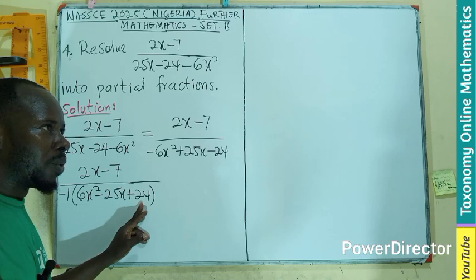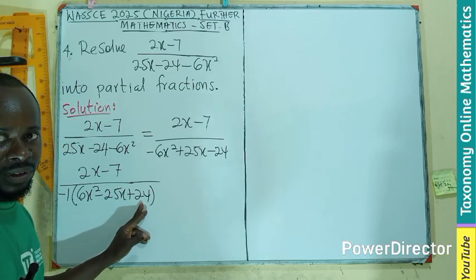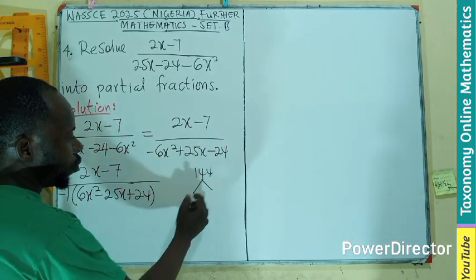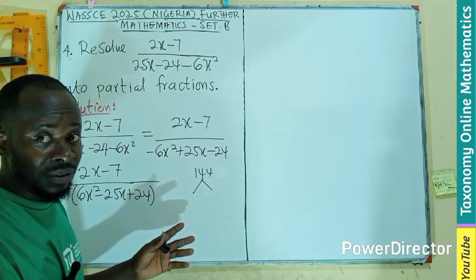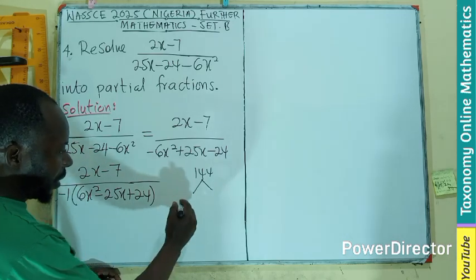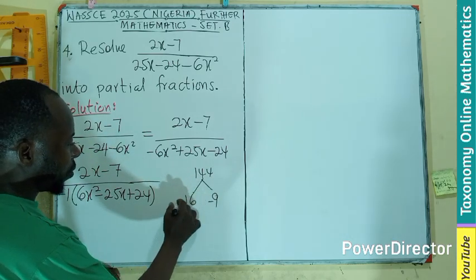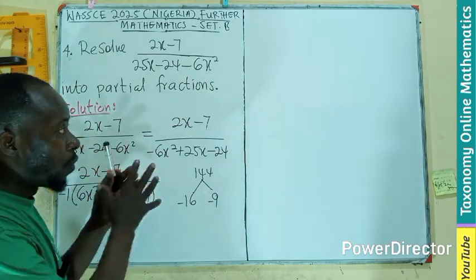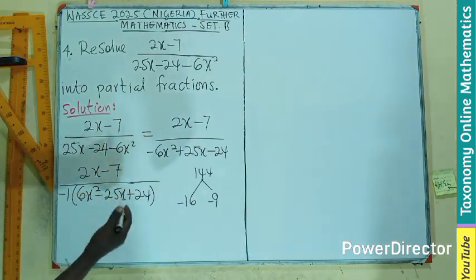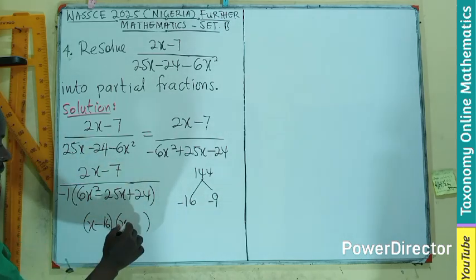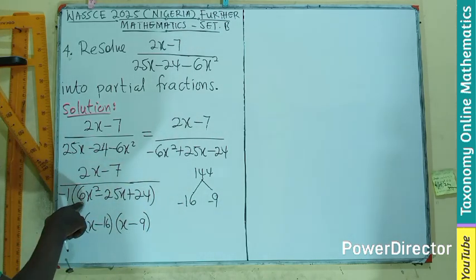Now, divided by minus 1 into bracket 6x squared plus 25x plus 24. Let's see whether it is a reducible quadratic term. 6 times 24, 120 plus 24, that is 144. So you find the factors of 144. If I have positive 144, I need those two factors to be both negative, so that when I add, I have a negative value, when I multiply, and if you check carefully, you will be having 16 and 9.